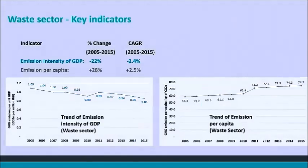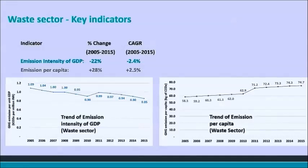Looking at how the waste sector fares with regards to emission intensity: overall we've seen that emission intensity cumulatively has decreased by 22%, which basically aligns with our national targets under the NDC. Year on year we've seen a change of around 2.4%. In terms of per capita emissions, these are rising — population growth per year has been around 1 to 1.5% in this period, and emissions are rising at a faster rate. There are some drivers that will also need to further reduce the emission intensity, and the rate of growth of emissions, which I'll get to in the next few slides.